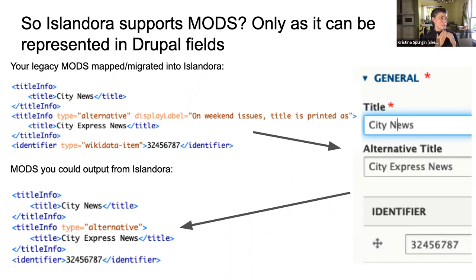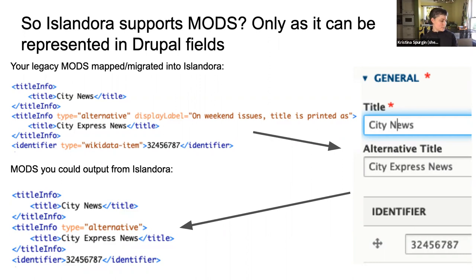I'm in the process of dealing with a lot of legacy MODS from Islandora 7 going into Islandora 8. I have metadata like a display label on my alternative title and an identifier type on my identifier element, and it can go into Islandora like shown here. You could set things up in so many different ways, but out of the box you can kind of get it in there — then you can have it map out as MODS at the bottom, but you've lost some pretty significant information there. Whether you care about that information is up for discussion.